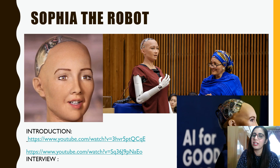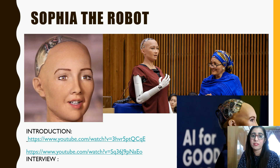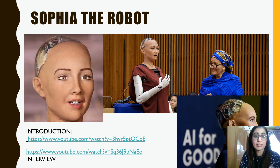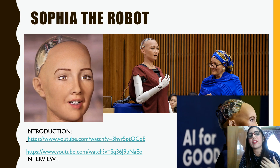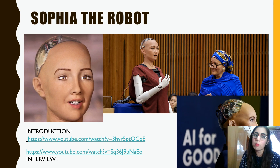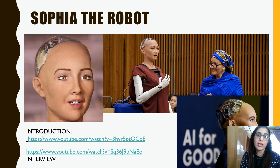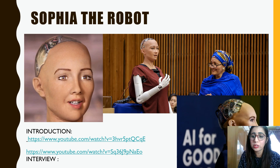Sofia can converse on predefined topics, for example the weather. The AI program used to create Sofia helps her analyze conversation, extract data, and improve responses in the future. Hanson designed Sofia to be a companion for the elderly in nursing homes and to help crowds at large events. Sofia is marketed as a social robot that can mimic social behavior and induce feelings of love in humans. You can find many interview videos on YouTube by searching 'Sophia the Robot.'